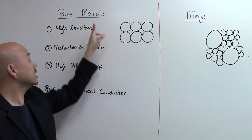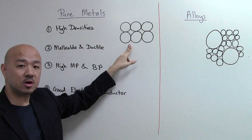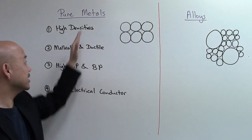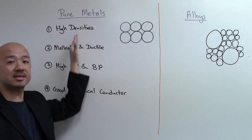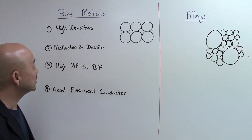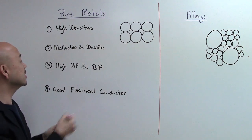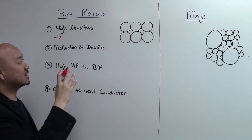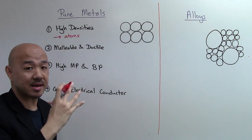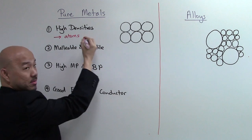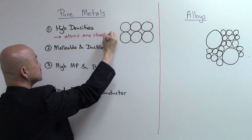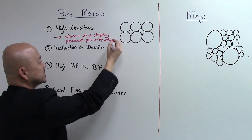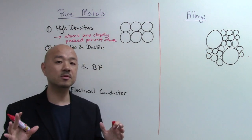I'm going to start the discussion with pure metals and draw the particles — which are the atoms — in the structure. There are four key properties of metals. First, metals have high densities. In pure metals, the atoms are closely packed together per unit volume, and that is what gives metals their high densities.